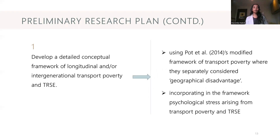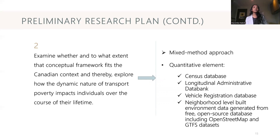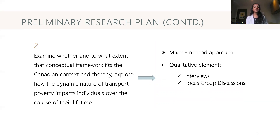As part of the detailed conceptual framework, I am thinking of using a modified framework of transport poverty where geographical disadvantage is considered separately. I am also thinking of incorporating psychological stress arising from transport poverty and transport-related social exclusion. To examine the extent to which the conceptual framework fits the Canadian context, I plan to use a mixed-method approach. As part of the quantitative element, I will use census data, longitudinal administrative data bank, vehicle registration database, and neighborhood-level built environment data generated from open-source databases like OpenStreetMap and GPS. As part of the qualitative element, I plan to conduct interviews and focus group discussions.